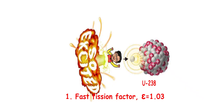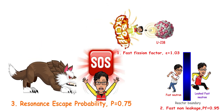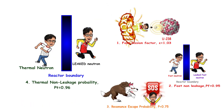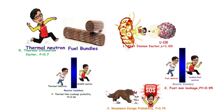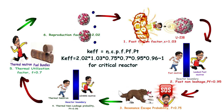Thus, neutrons can fast-fission uranium-238, leak out of the reactor as a fast neutron, meet resonance capture, leak out as a thermal neutron, or get absorbed in fuel and fission with uranium-235.